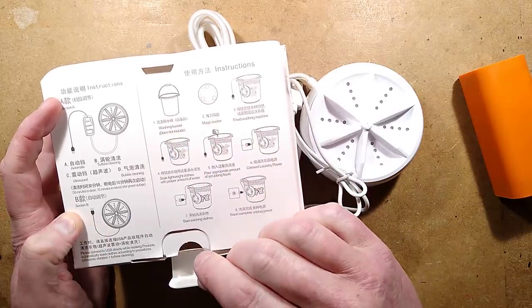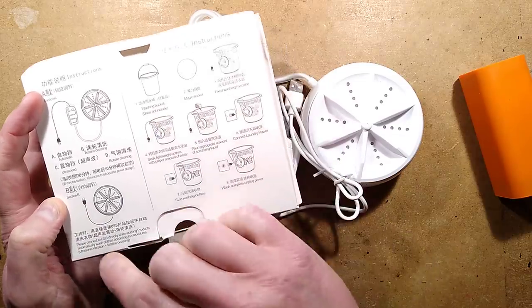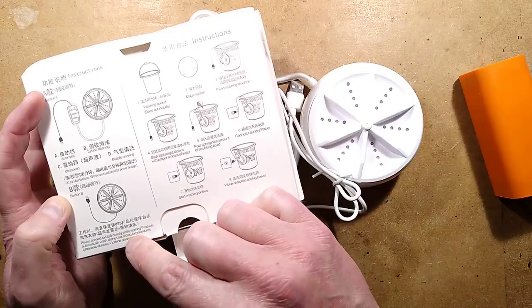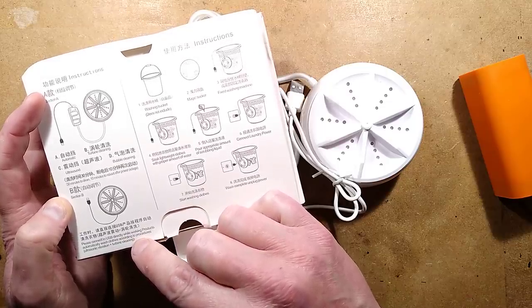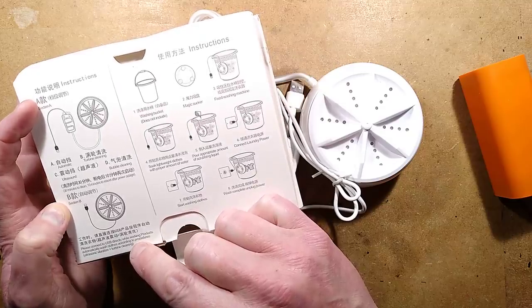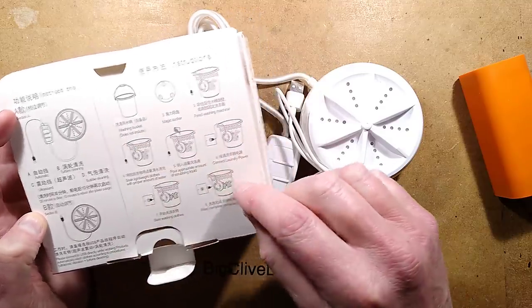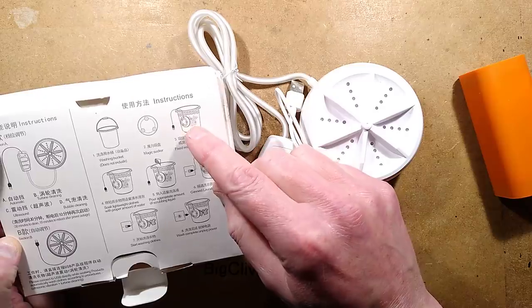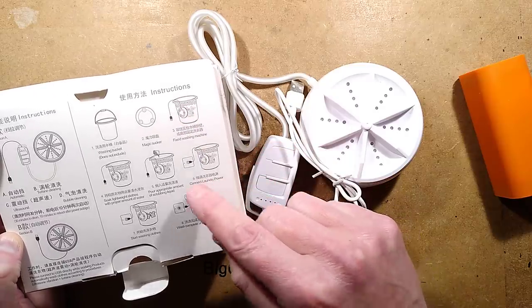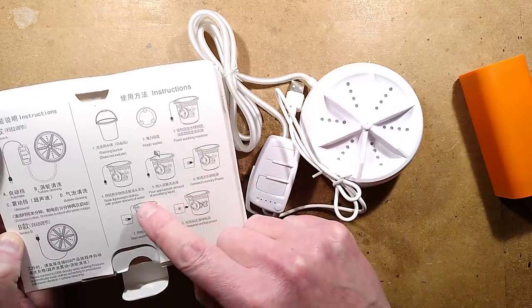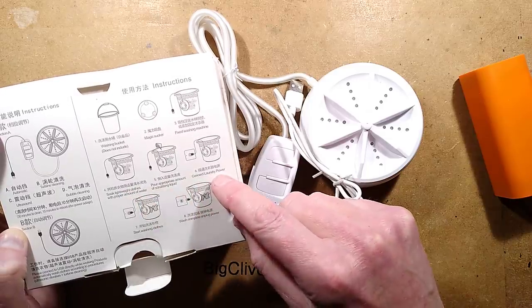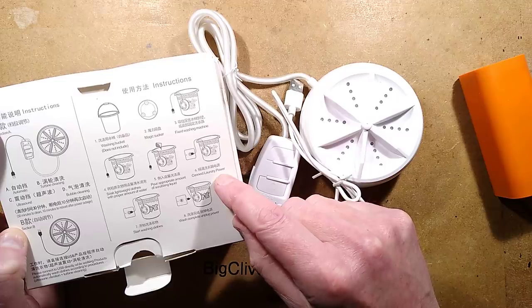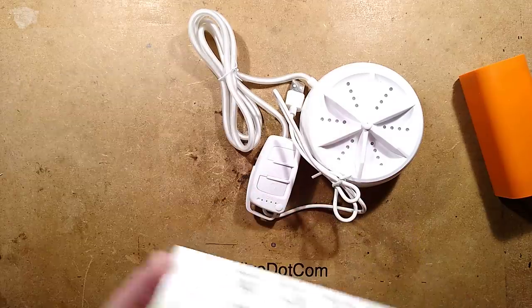Does that mean it's got a 10 minute cool down time? Not really sure. Please connect to USB directly while working. Products automatically wash clothes according to procedures, ultrasonic, vibration and turbine cleaning. Doesn't include the washing bucket. So you have to stick it to the inside of the washing machine, the bucket. Soak lightweight clothes with proper water and connect the laundry power after putting in detergent. That seems reasonable enough.